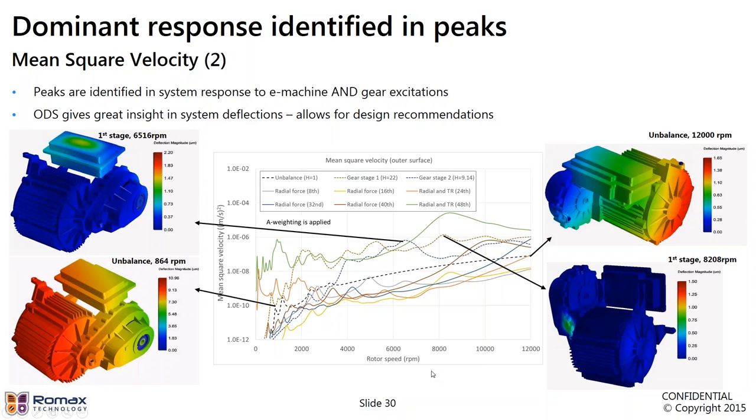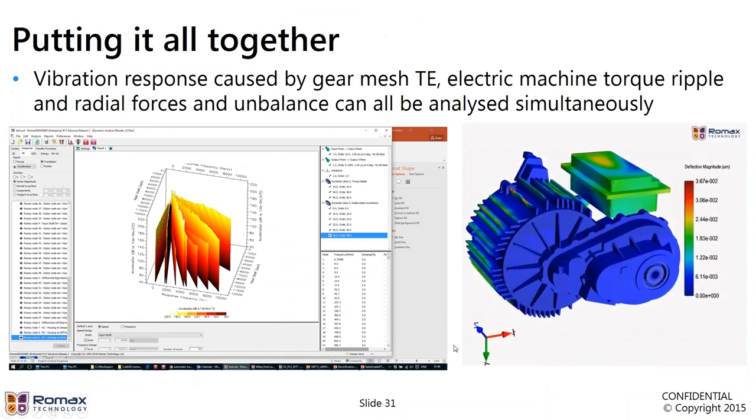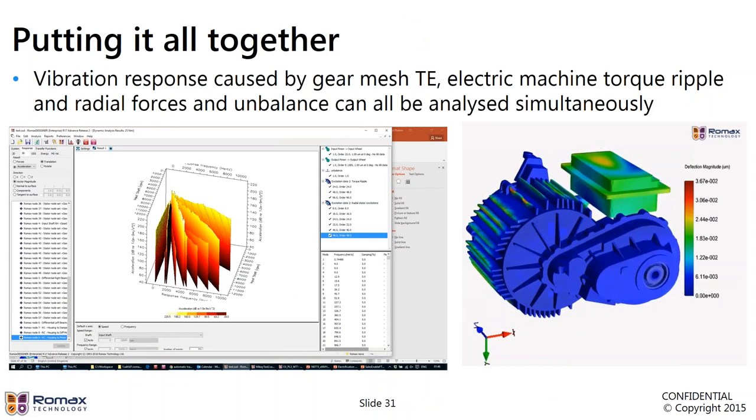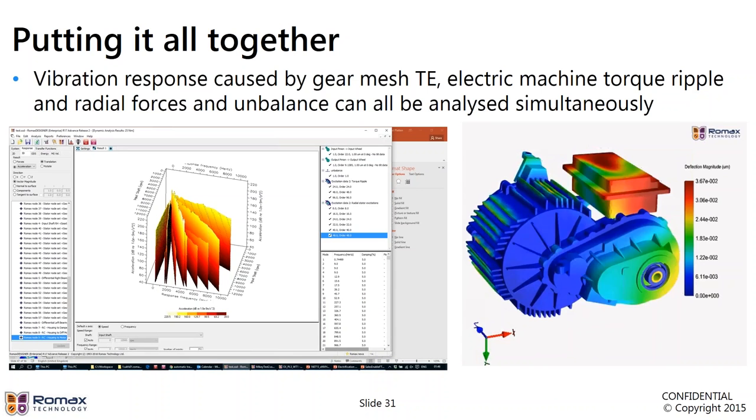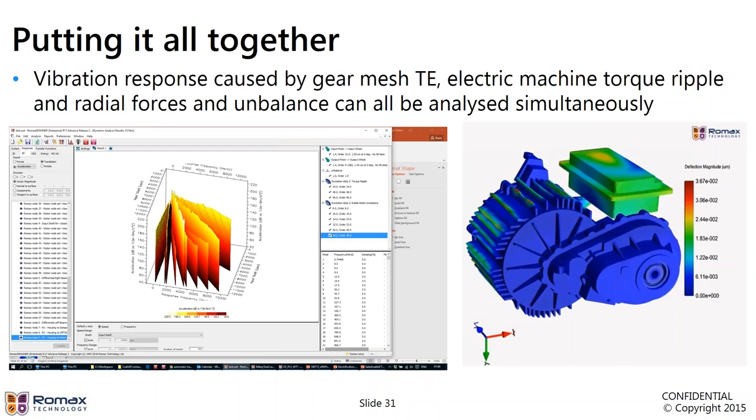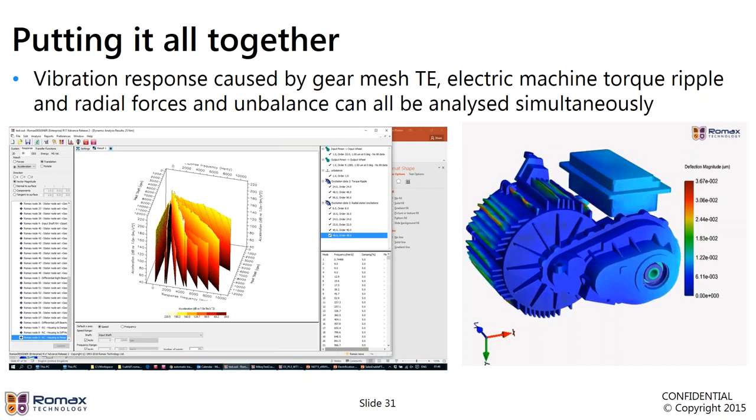Once we've identified certain frequencies that we want to look into more detail, we can generate operating deflection shapes for those and see exactly where the housing is deflecting the most, which will give us some indication of what can be improved in the design. So, for example, here we can see that the inverter box is responding quite strongly to the 48th harmonic of radial force and torque ripple of the electric motor. We could maybe introduce some ribs or some other way of stiffening this up. We can see the response to lower frequencies and we have some movement of the fins at high frequencies. So, essentially, we can look at each of the excitations or all of the excitations together in a single environment.